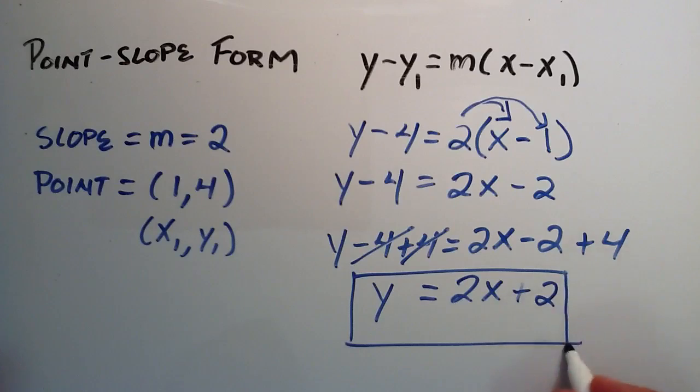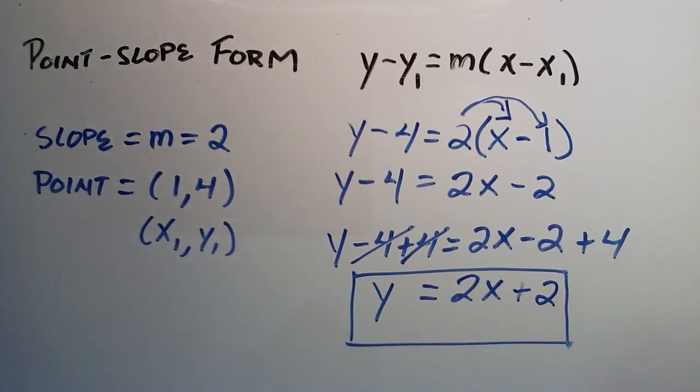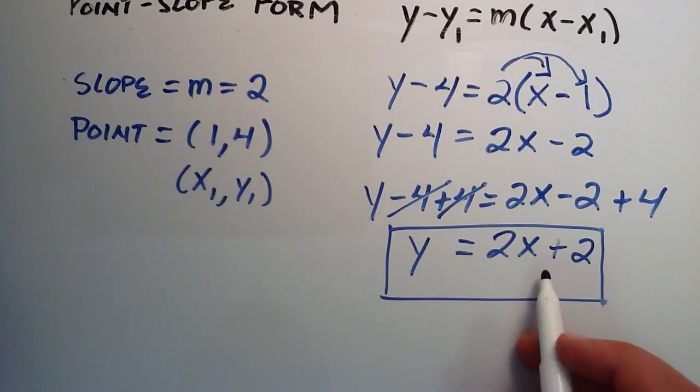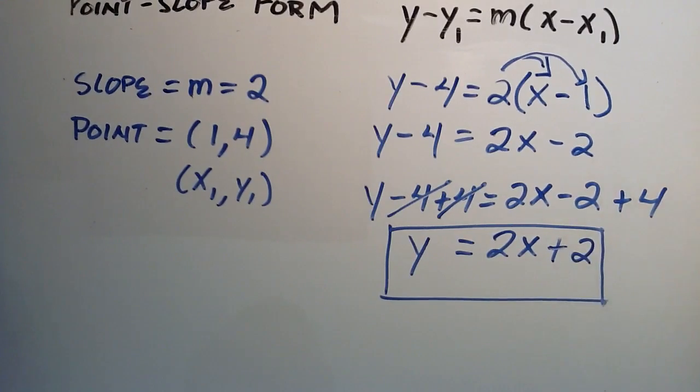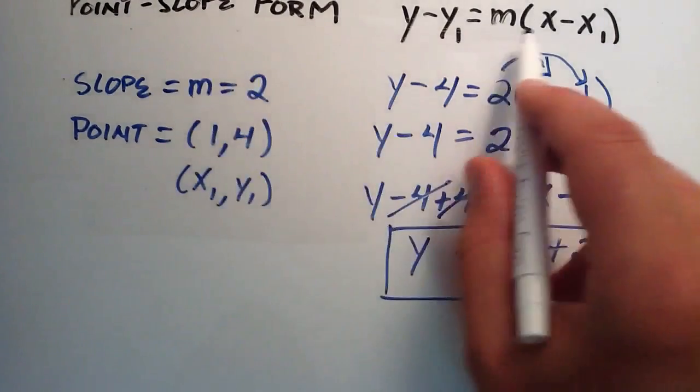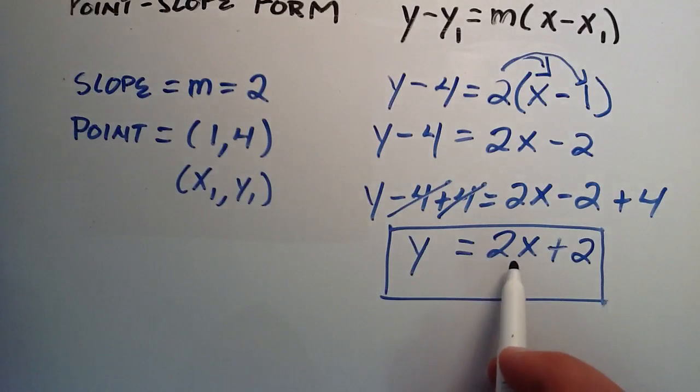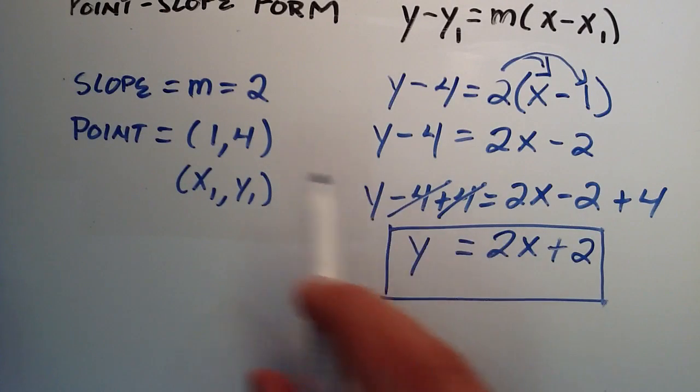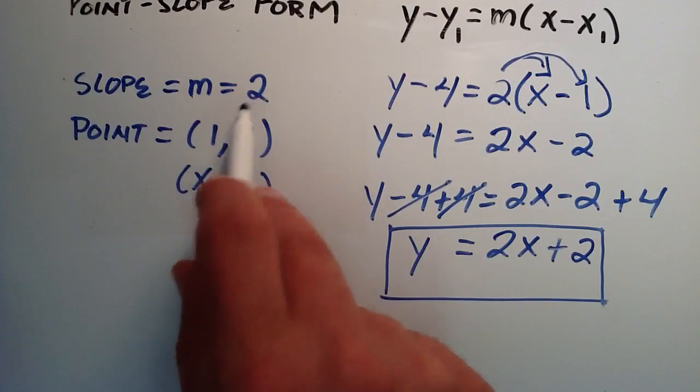And that tells us what our line is. So this is the equation of a line in slope-intercept form. And because we derived it from the point-slope form, it tells us that this line has the point (1, 4) on it and has a slope of 2.